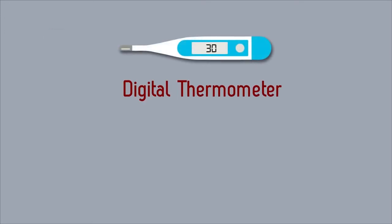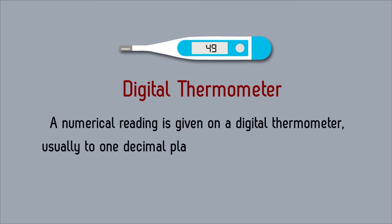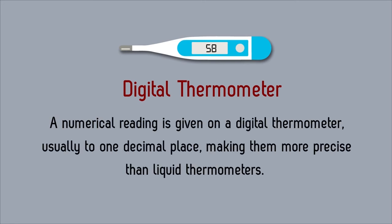Digital thermometer. A numerical reading is given on a digital thermometer, usually to one decimal place, making them more precise than a liquid thermometer.